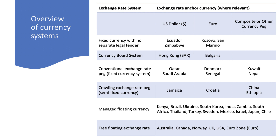More countries typically manage their floating system — Mexico, South Korea, South Africa, India, and Japan are in that group. And according to the IMF's latest classification, taken directly from their latest report, Australia, Canada, Norway, the UK, the USA, and the eurozone are still categorized as free floating exchange rates.